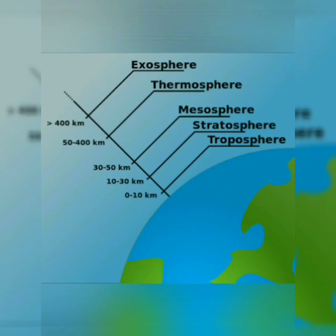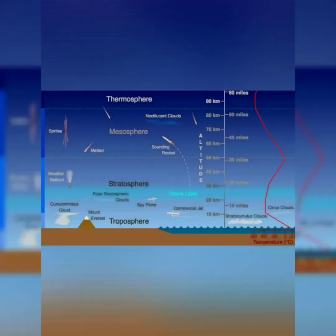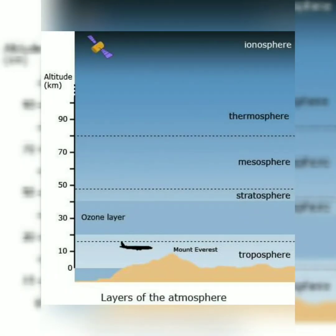Next is argon, another important gas in the atmosphere at 0.934 percent, which helps in industrial applications. Carbon dioxide is at 0.04 percent and helps plants to perform photosynthesis — with the help of carbon dioxide, plants make food, which also benefits us. Water vapor plays a key role in the water cycle and weather phenomena.